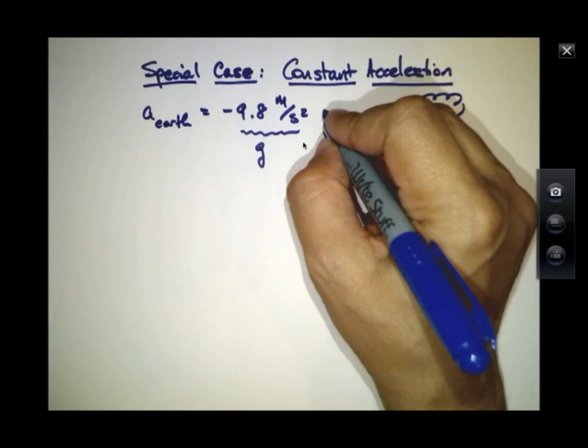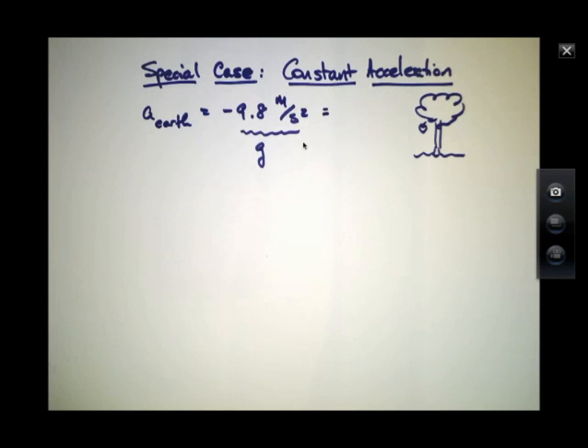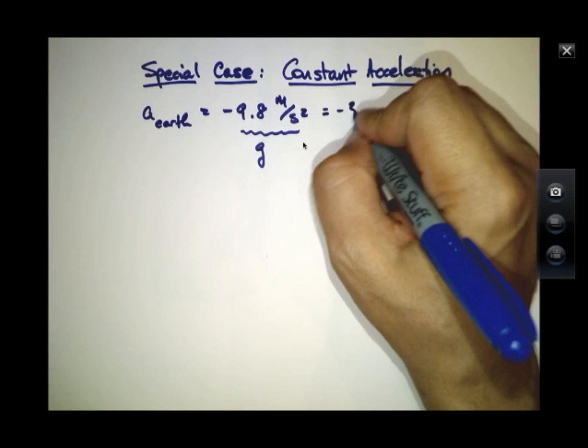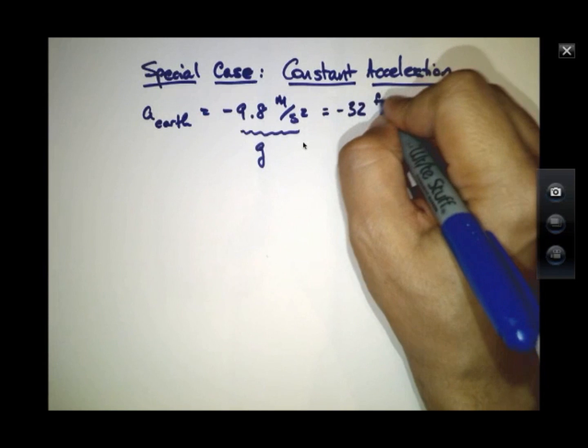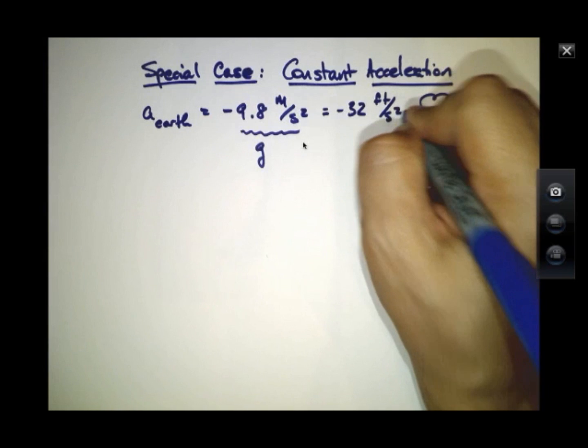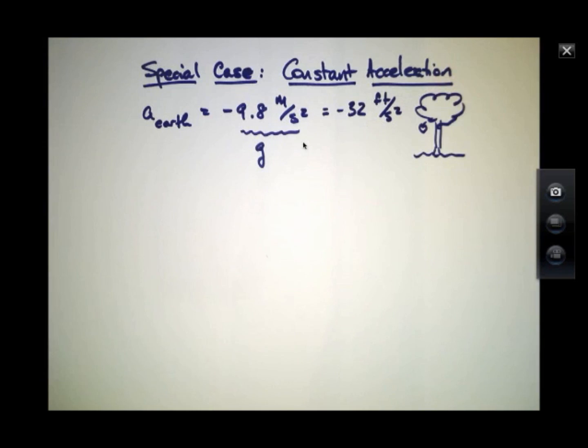I should point out also g in the British system turns out to be about 32 feet per second squared, although it's more common to use 9.8. In fact, 9.8 is close enough to 10, but for many calculations we'll end up just using that g is approximately 10.